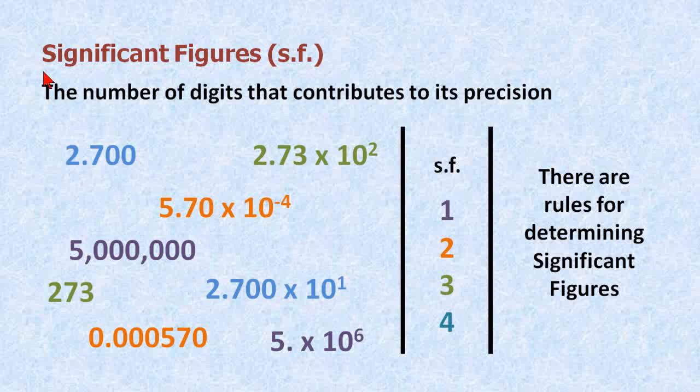Let's talk a bit about significant figures, or S.F. as the abbreviation. The number of digits that contribute to its precision is how significant figures are defined. On the left here, we have eight numbers, and they're divided into four colors.